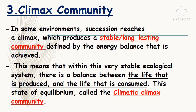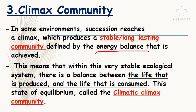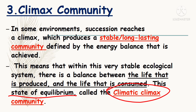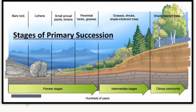The last stage is climax community, which simply means the establishment of a stable, long-lasting community that stays under energy balance. We call it the climax community because that forest never erodes. In this community, there is a balance of life — life is produced and consumed in energy balance. This state of equilibrium is called the climax community. The stages progress from primary succession as pioneer stages, then secondary, then climax community, in which shade-tolerant trees exist in large quantities.